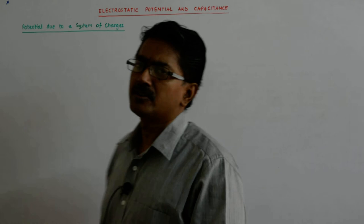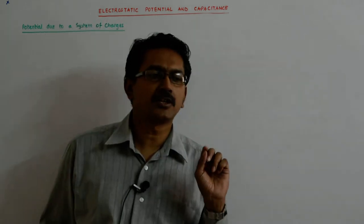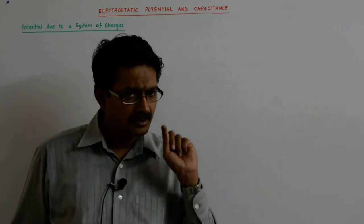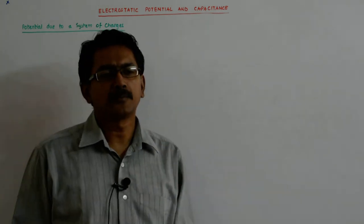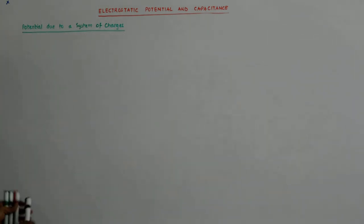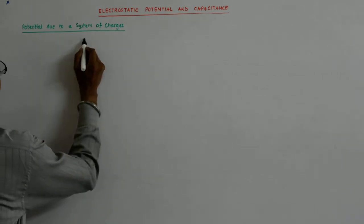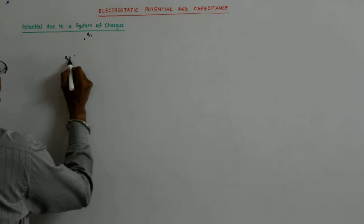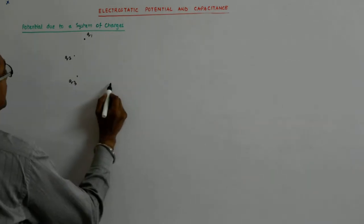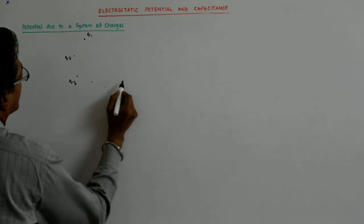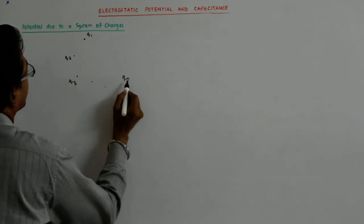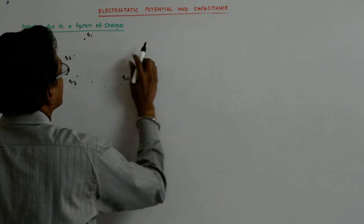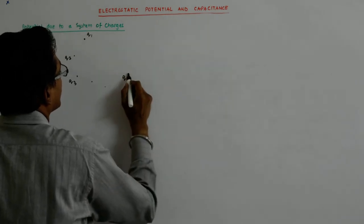Now we come to the potential due to a system of charges. We saw the potential due to a single charge, we saw the potential due to a dipole. Now we come to multiple charges - it could be any number. So let us say I have Q1 here, and Q2 here, and Q3 here, dot dot dot, and Qn here.